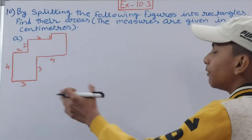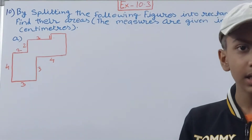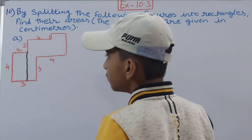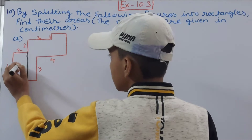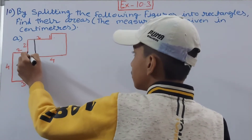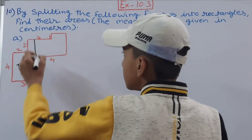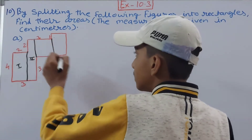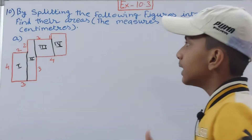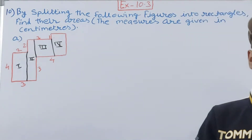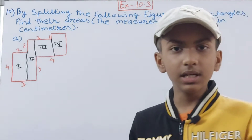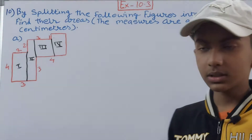You have to draw lines to split this into rectangles. From here all the way to here, this makes one rectangle. Then from here all the way to the top, this makes the second rectangle. From here to here, this makes the third rectangle, and the last one is the fourth rectangle. So we have made four rectangles. We will find their areas one by one, then add them to get the total area of the irregular figure.